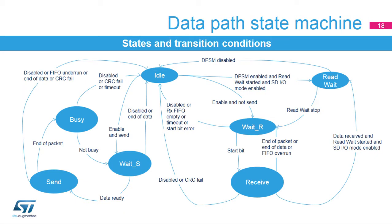The Data Path State Machine (DPSM) controls the transmission and reception of all data. When the DPSM is in idle state, the first transition is triggered when the DPSM enable bit and transfer direction are set. Note: the DPSM enable bit must not be used to transfer data with SD, SDIO, and MMC cards. For data transmission, when enabled, the DPSM moves from idle to wait-S state and then to send state. While in wait-S state, the DPSM waits until the data FIFO empty flag is deasserted. When data is available in the FIFO buffer, the DPSM moves to the send state, where it starts sending data to a card according to the data rate, bus mode, and bus width set in the control register.